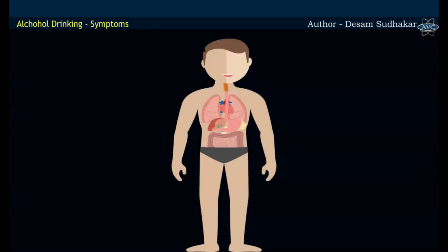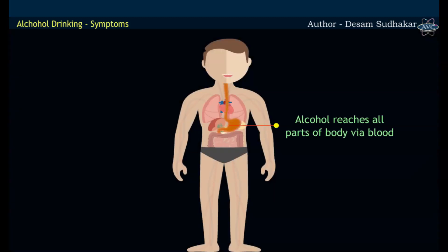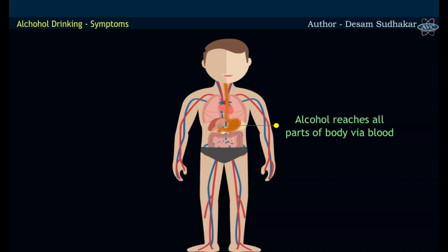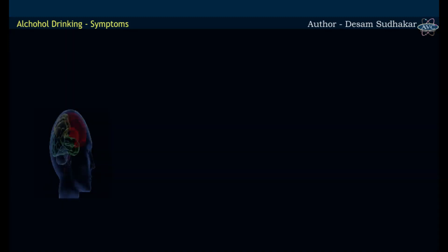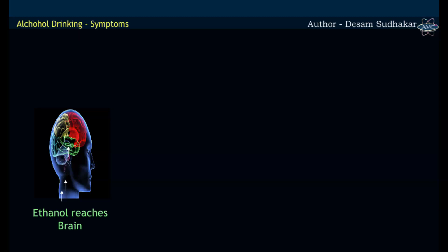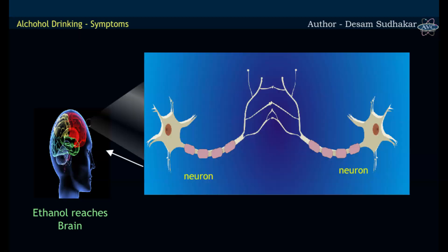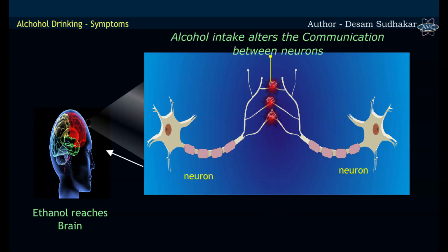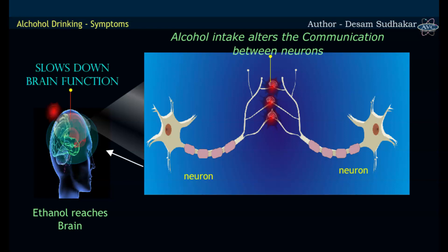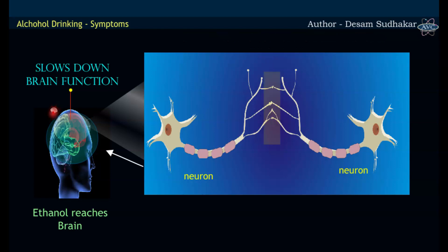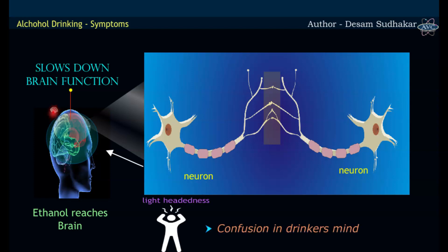When a person drinks alcohol, it reaches all parts of the body via blood. As ethanol reaches the brain, the nerve cells or neurons are affected. Thus, the communication between the nerve cells is disturbed, as a result of which it slows down brain function. This slowdown caused by alcohol intake creates lightheadedness and confusion in the drinker's mind.